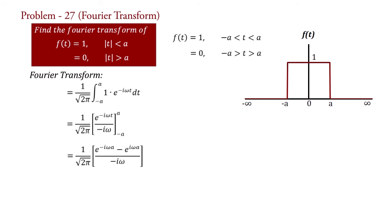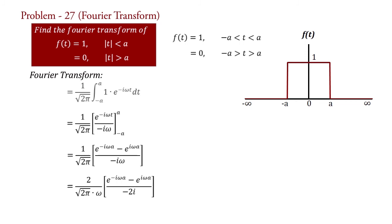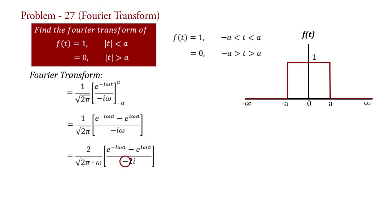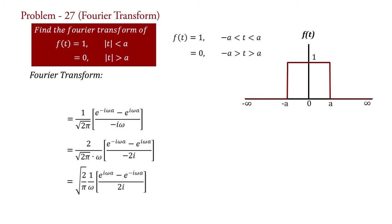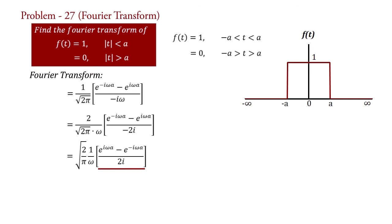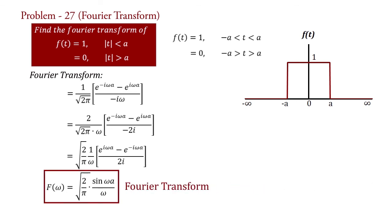Multiplying numerator and denominator by 2 and rearranging, we get F(ω) = 2/√(2π) · [e^(iωa) − e^(−iωa)] / (2iω). Removing the negative sign by interchanging the numerator terms, and using the identity that the bracket equals sin(ωa), we arrive at F(ω) = √(2/π) · sin(ωa) / ω. This is the Fourier transform of the given function.